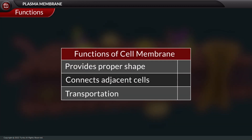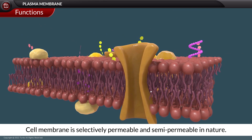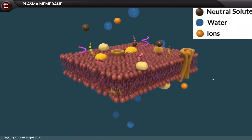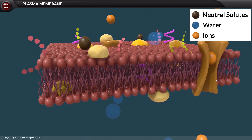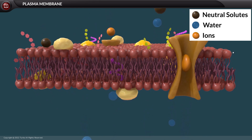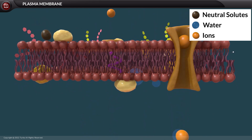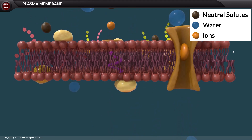The cell membrane provides a proper shape to the cell, keeps adjacent cells in contact, and plays an important role in transport. The cell membrane is selectively permeable and semi-permeable in nature, allowing only selective materials to pass through it. It allows transport of molecules like water, minerals, ions, glucose, amino acids, oxygen, and carbon dioxide.